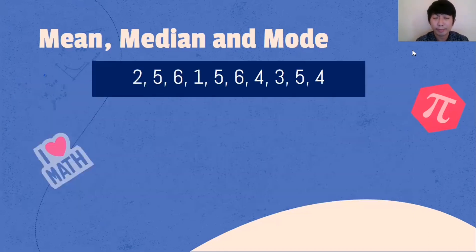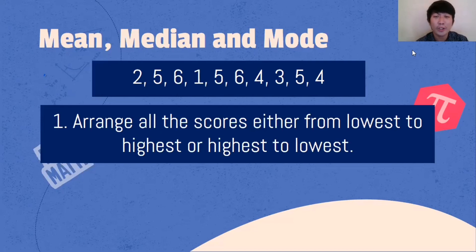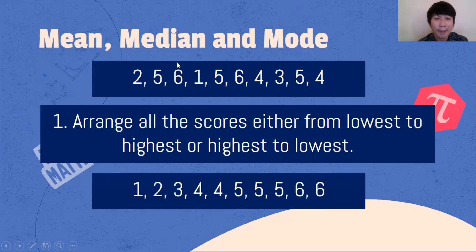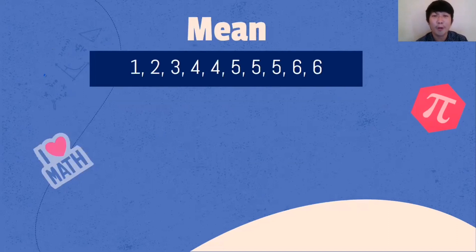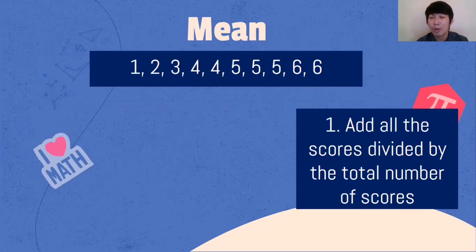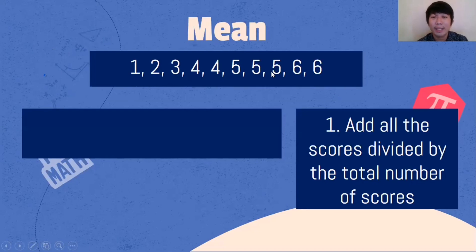Let's try an example. Given the scores 2, 5, 6, 1, 5, 6, 4, 3, 5, 4 — what is the first thing to do? The first thing to do is to arrange all the scores either from lowest to highest or highest to lowest. I prefer to arrange them from lowest to highest, so we have: 1, 2, 3, 4, 4, 5, 5, 5, 6, 6.